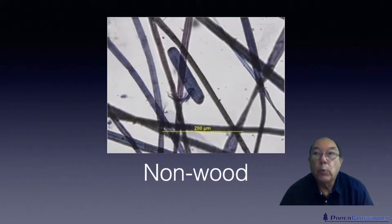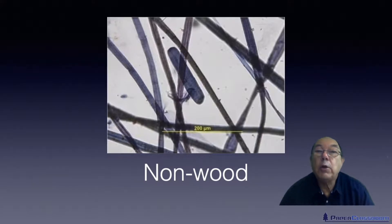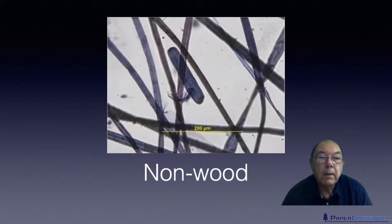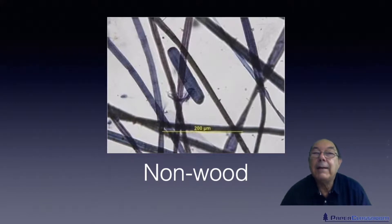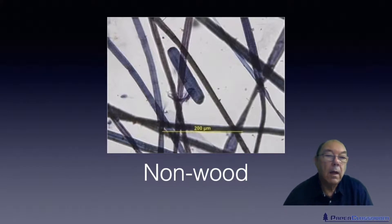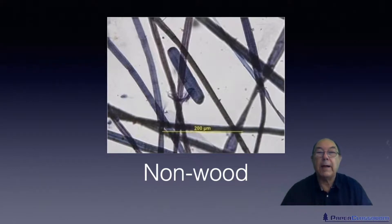We also produce non-wood fibers. Another term for these is annual crops — things that we plant and harvest in the same year. Cotton is a good example. The cotton fibers are the seed hair: the fiber longer than about eight millimeters goes to the textile industry, and the stuff that's less than eight millimeters we use in the paper industry. Abaca comes from the leaves of a plant that looks a bit like the banana tree.